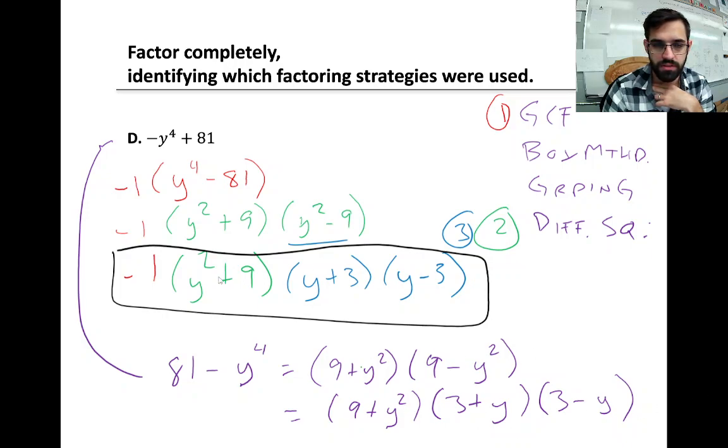This answer is similar to the answer that we got from before. The only difference is we have 3 minus y down here, and we have a negative 1 up here. If I multiply the negative 1 times the y minus 3, it would be negative y plus 3, which is the same thing as 3 minus y. So these two answers are equivalent. On a quiz, I would take either one.